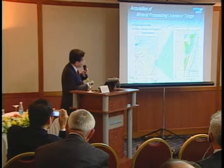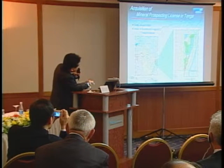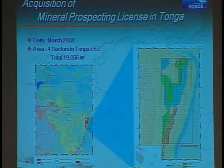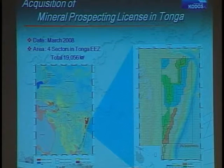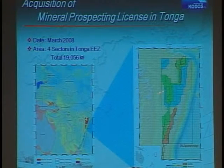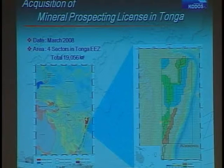On the map, red represents KORDI, green represents Nautilus, and blue represents Blue Metal companies.